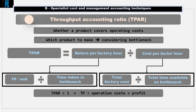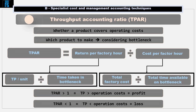If the throughput accounting ratio is greater than 1, then throughput is greater than operating costs and a profit will be made. If the throughput accounting ratio is less than 1, then operating costs are higher than throughput and a loss is made. Where a loss is made we would not want to make this product. Where more than one product has a throughput accounting ratio greater than 1, products would be ranked from the highest ratio to the lowest, and the production plan would be based on this ranking.